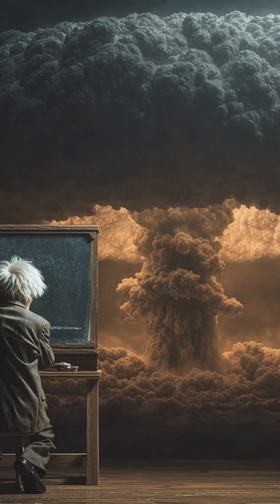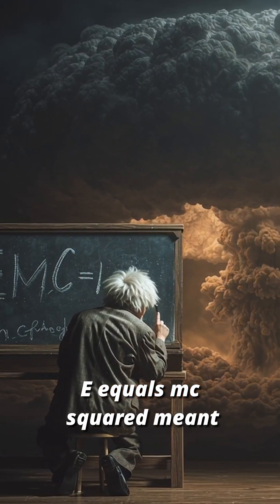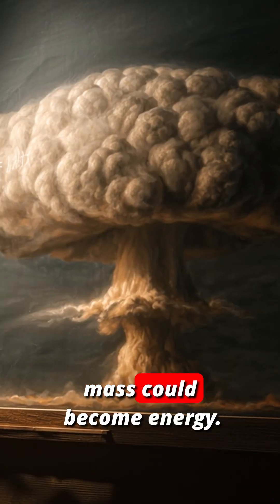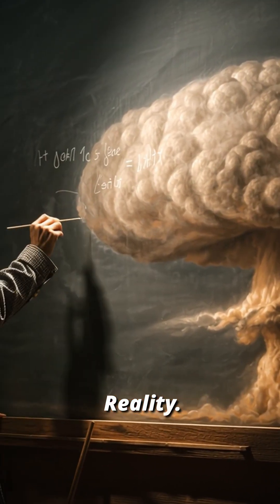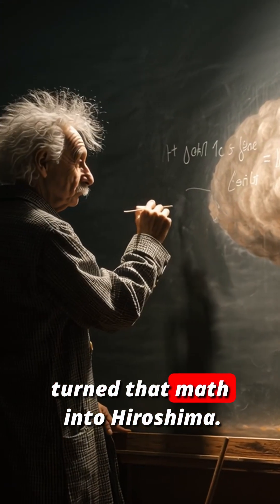One, atomic bomb prediction. E equals mc squared meant mass could become energy. Reality: The Manhattan Project turned that math into Hiroshima.